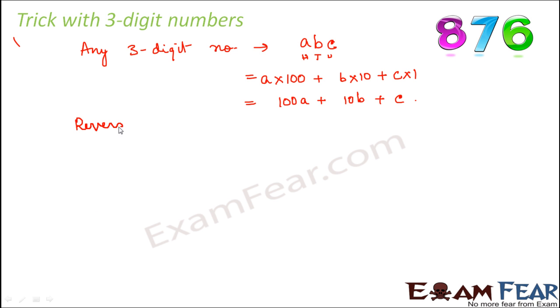Now let's reverse the digits. So when you reverse the digits it becomes CBA, just the opposite order. CBA can be written as C×100 + B×10 + A×1, that is equal to 100C + 10B + A.